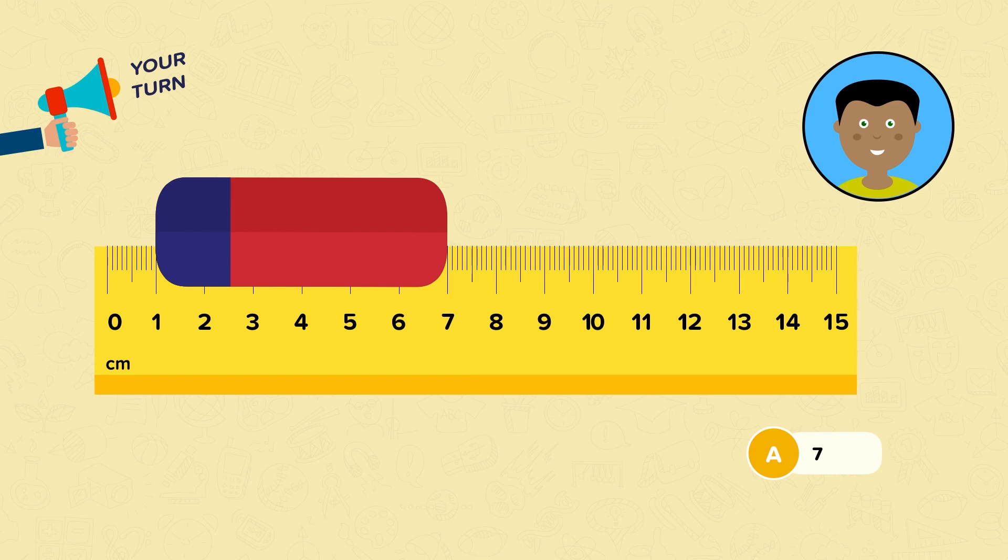Marcel's answer is 7. But he hasn't included the units, centimetres. So this is his first mistake. He also hasn't started measuring from zero. The correct answer should be 6 centimetres. Well done if you spotted both of Marcel's mistakes.